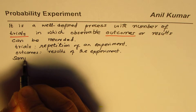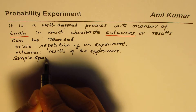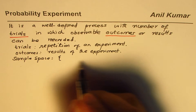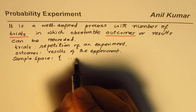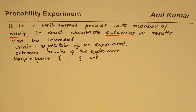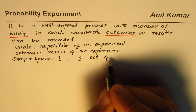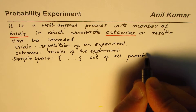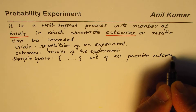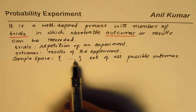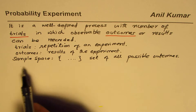There are a few more terms we should understand. One is 'sample space,' normally given in curly brackets — that gives you a set. This is the set of all possible outcomes. Whatever the results are, they are measurable results, and the set of all those results becomes the sample space.